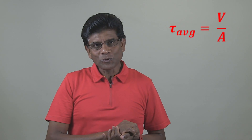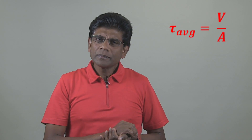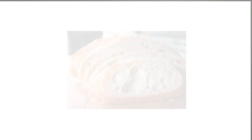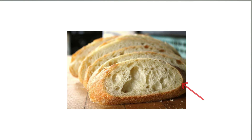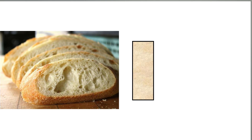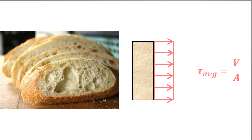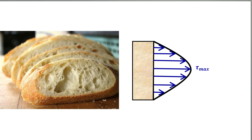Average shear stress is equal to shear force over area. But the average shear stress equation is not accurate. For example, the shear stress at the top or bottom of the body is equal to zero, because there is no cross-sectional area right above the top or below the bottom, so there is no shear at these locations. But the equation indicates the stress is uniform from top to bottom. In reality, the shearing stress changes from zero at the top or bottom to a maximum value at the neutral axis.